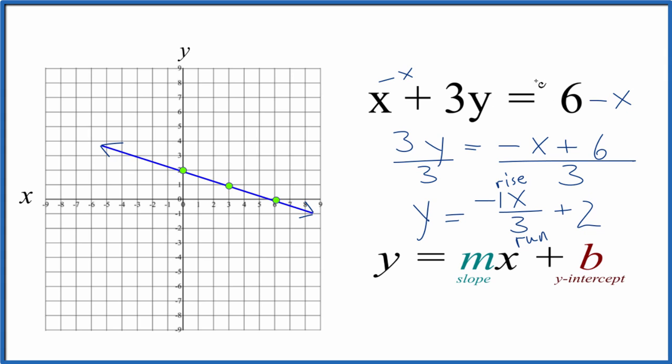You could also do this with a table of values, and you'd end up with the same line. This is Dr. B graphing x plus 3y equals 6. Thanks for watching.